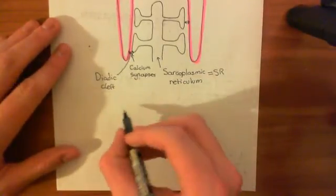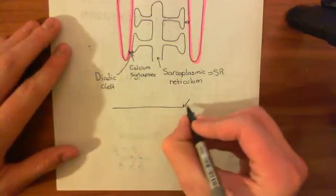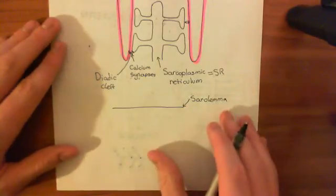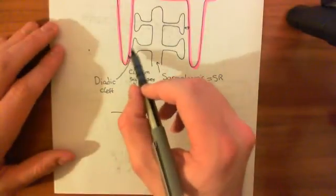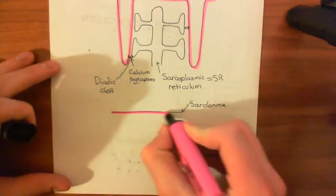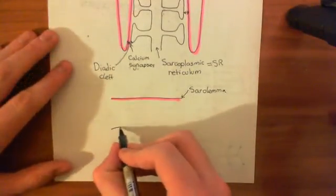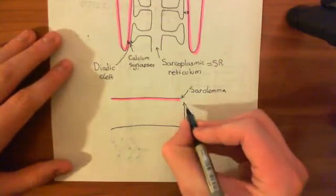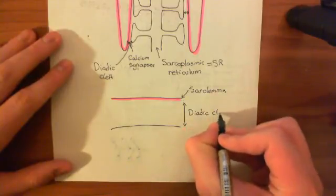If we draw the plasma membrane here — the sarcolemma — remember, the sarcolemma is just the fancy name for the cell membrane in a muscle cell. We've taken this piece of plasma membrane and rotated it 90 degrees. Then we've got the membrane of the sarcoplasmic reticulum here, and the gap between the two is called the dyadic cleft. This whole structure is known as a calcium synapse.